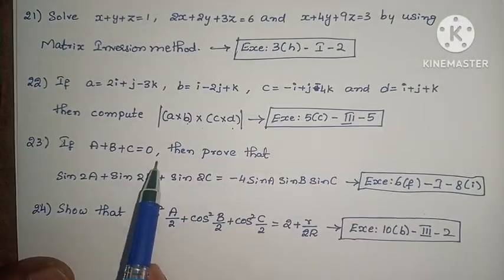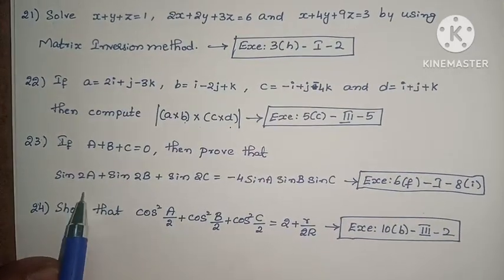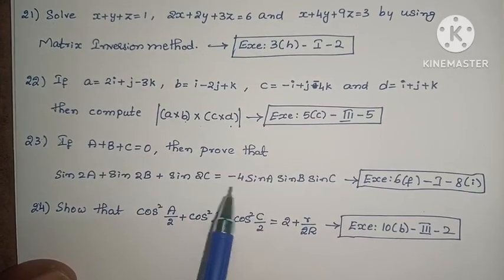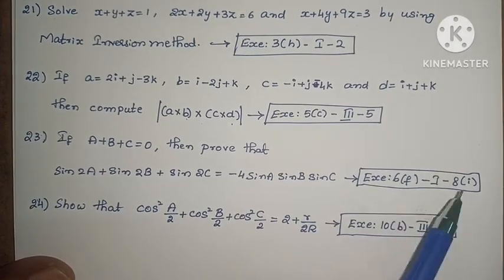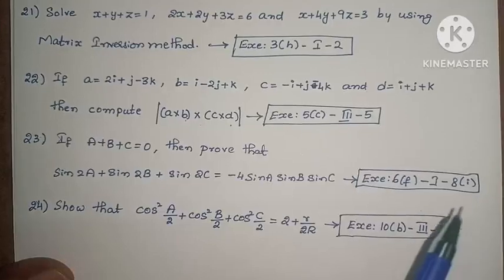Next, if A plus B plus C equals 0, then prove that sin 2A plus sin 2B plus sin 2C equals minus 4 sin A sin B sin C. Exercise 6, First Roman, Eighth, First one.